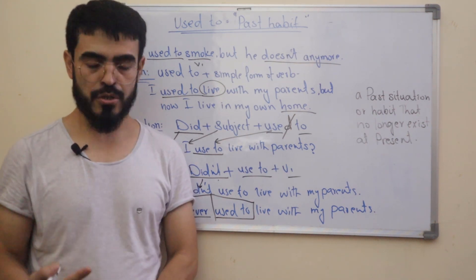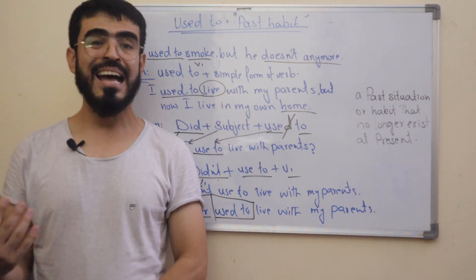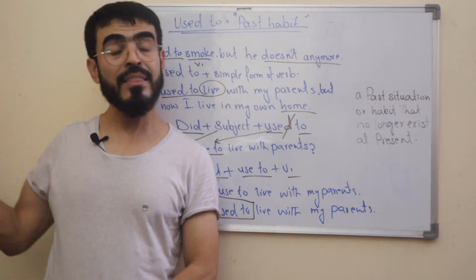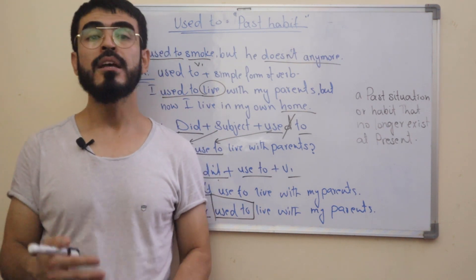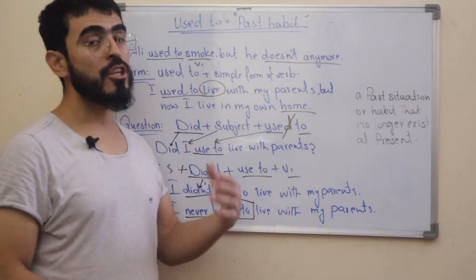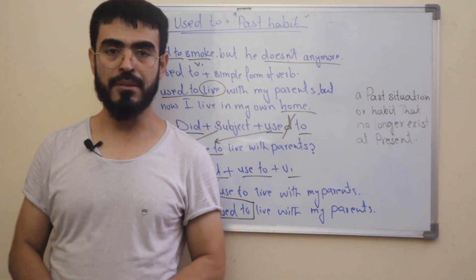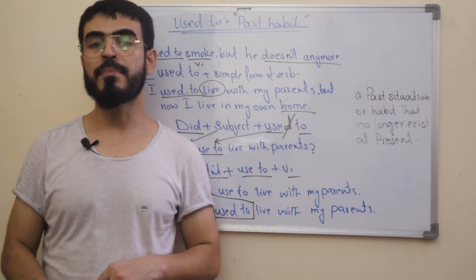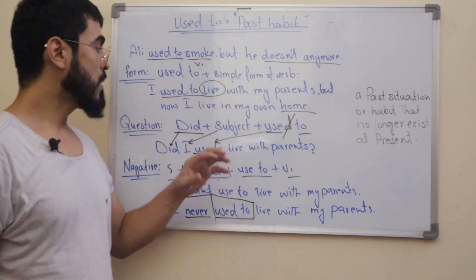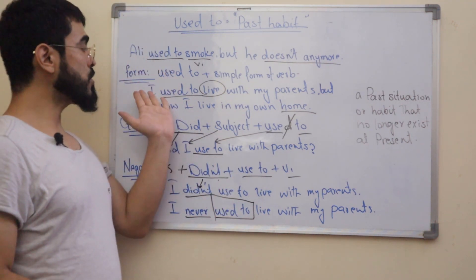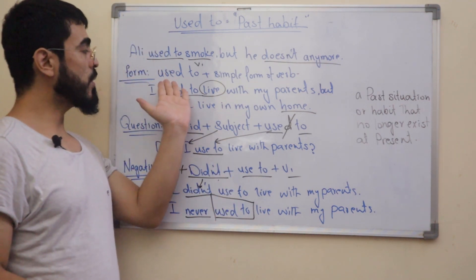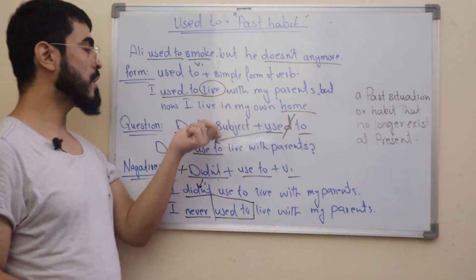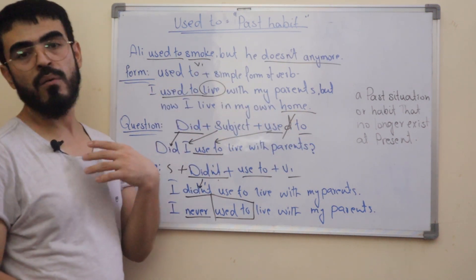So, what is 'used to'? If you want to talk about a past habit, or express a situation or habit that you had in the past but no longer have, you use 'used to' plus the simple form of the verb. Remember, we are talking about the past. For the positive form, we use: used to + simple form of the verb. For example: 'I used to live with my parents but now I don't.'